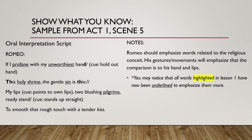Now we will read from the oral interpretation script we created. You'll notice the script on the left-hand side and some notes on the right-hand side. 'If I profane with my unworthiest hand this holy shrine, the gentle sin is this. My lips, two blushing pilgrims, ready stand to smooth that rough touch with a tender kiss.' You probably noticed that Romeo emphasized words related to the religious conceit — his gestures and movements emphasized the comparison of his hand and lips. All the words highlighted in lesson one have now been underlined to emphasize them even more.